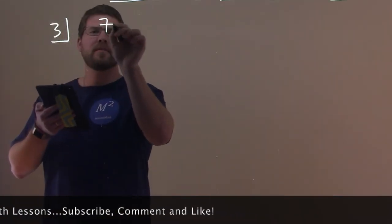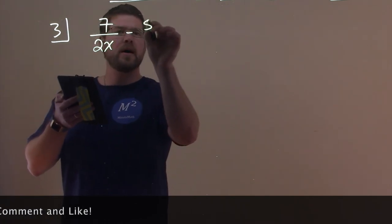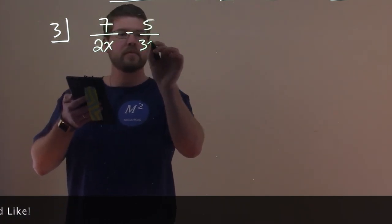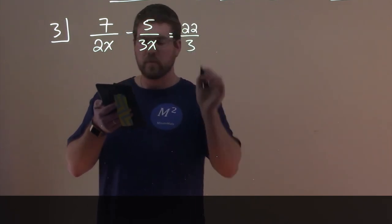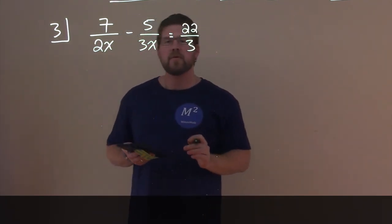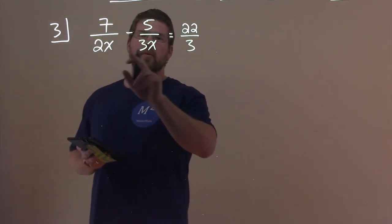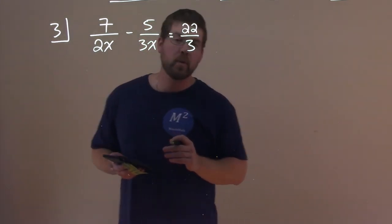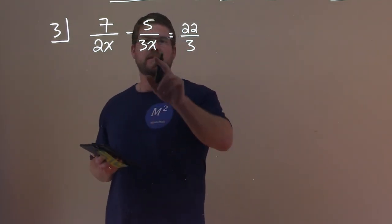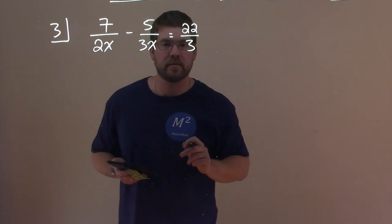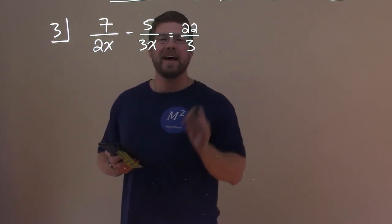We're given 7 over 2x minus 5 over 3x, and that equals 22 over 3. The first thing I'm looking at here is my denominators. We have 2x, 3x, and 3. We want to find the LCD here. 6x is contained by all three of these, so 6x is our LCD.